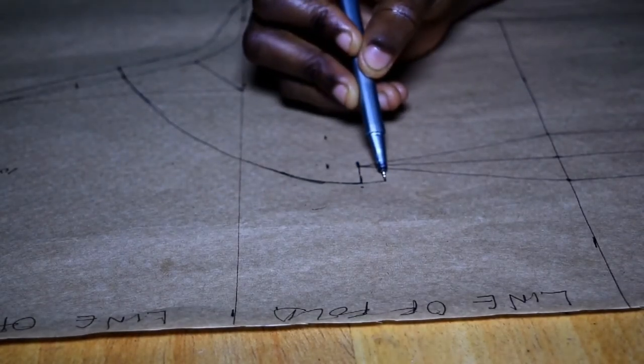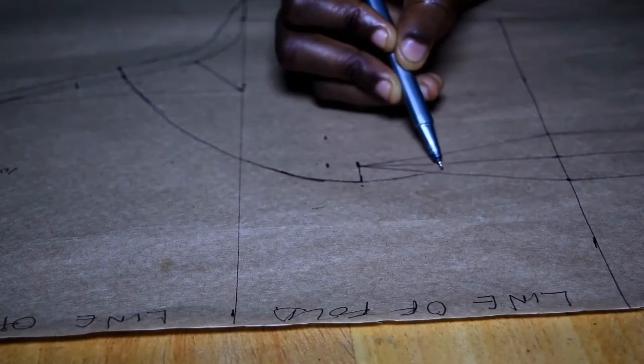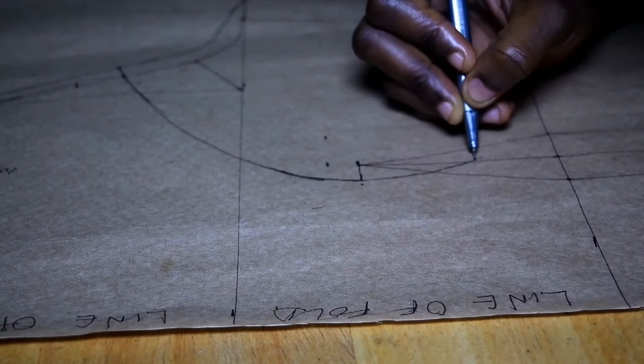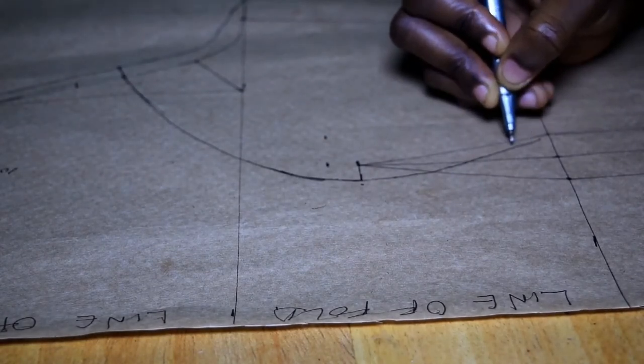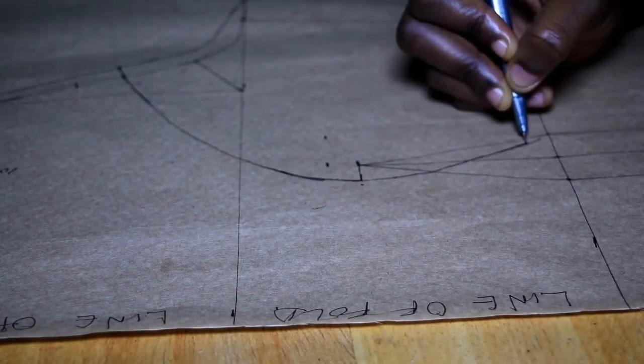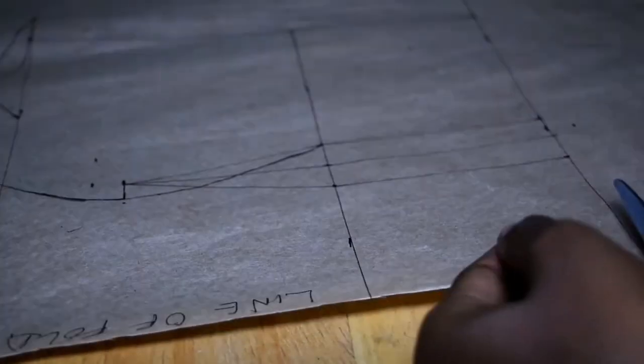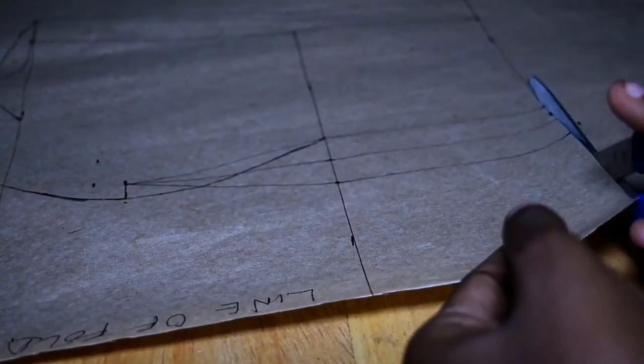And then to my under bust, not the first line, not the central line, but the other side. This is the C curve I was talking about where your bust is going to rest on. And then I begin to cut my bodice.